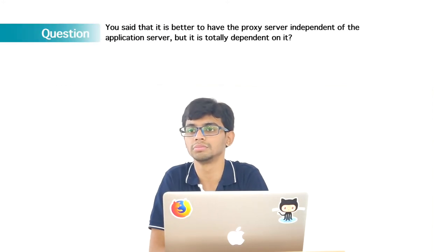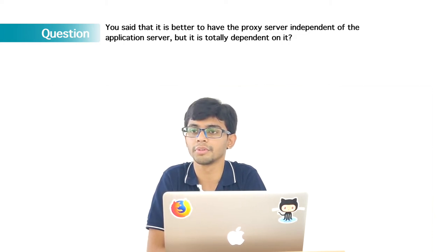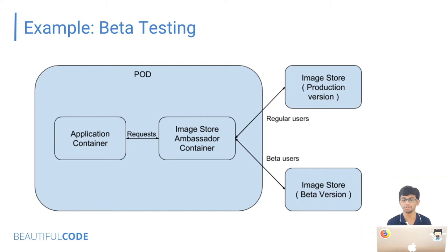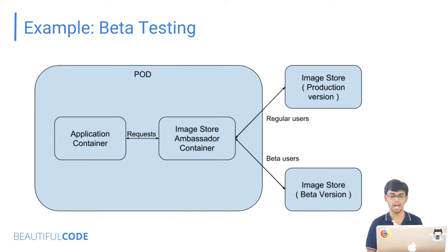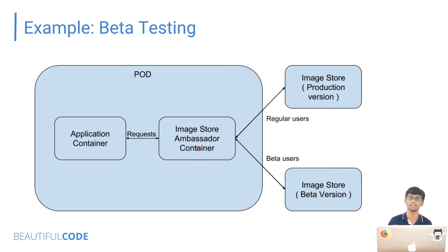It depends on your use case — it doesn't always make sense to go with an external container. For example, beta user routing is not something you do regularly. In that case, it might make more sense to have it as an ambassador container rather than a full external service, so you can just deploy it and bring it down when not needed.